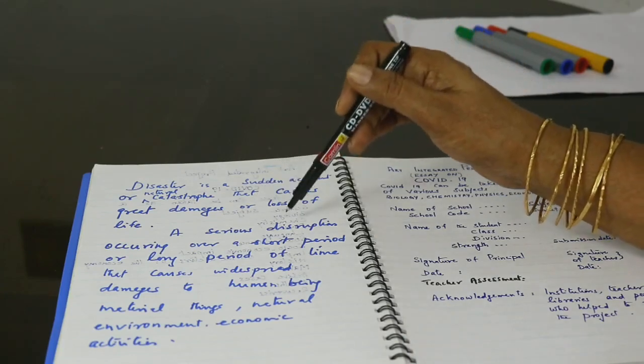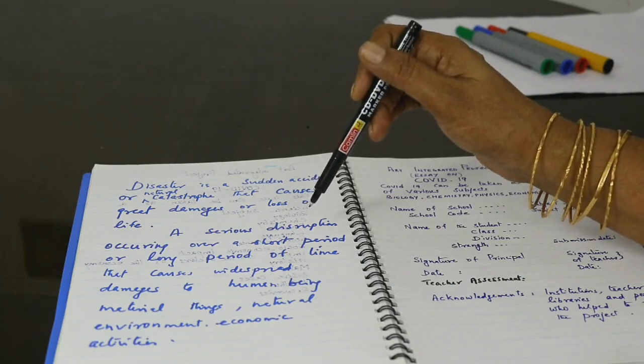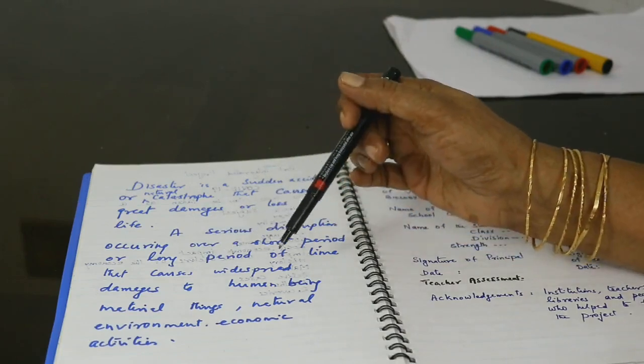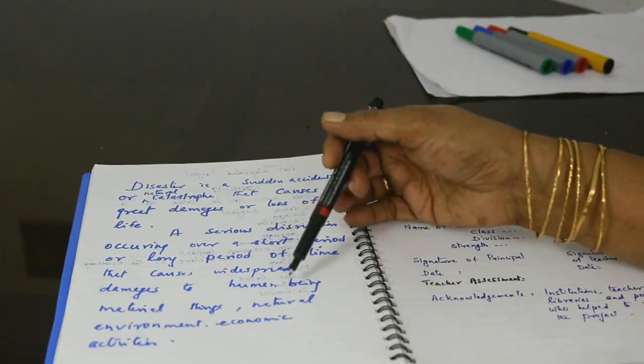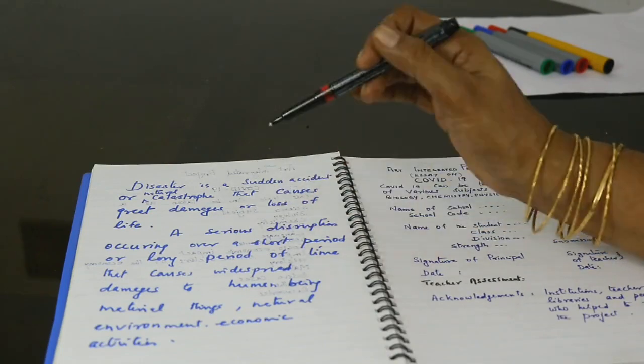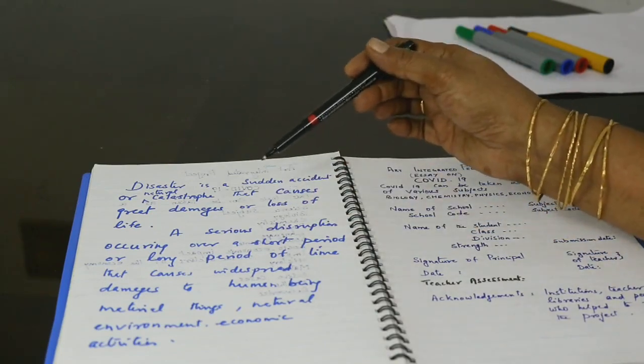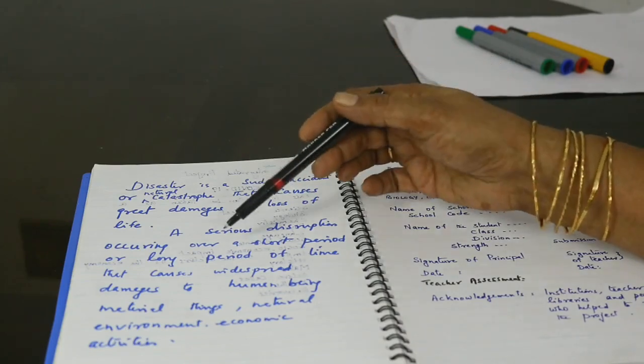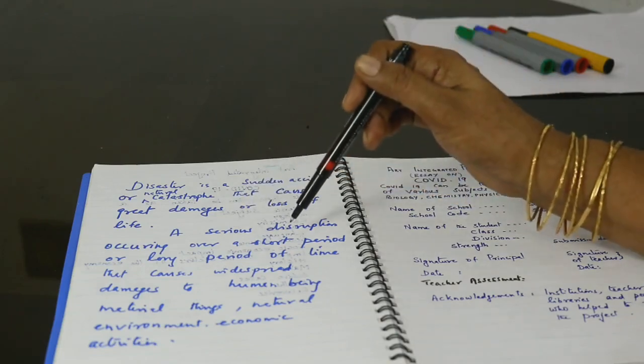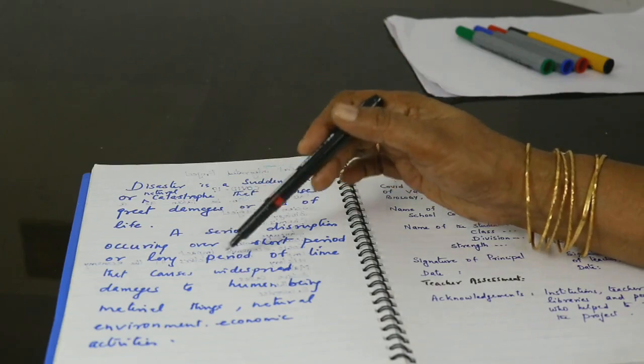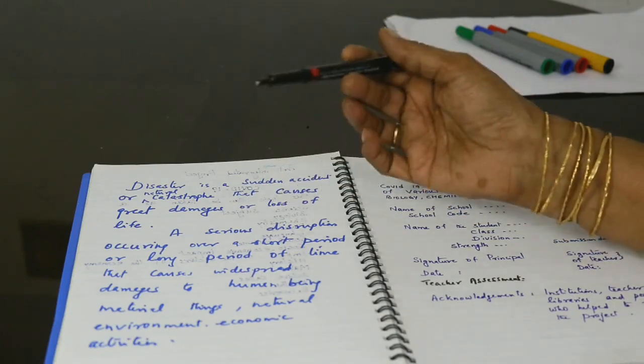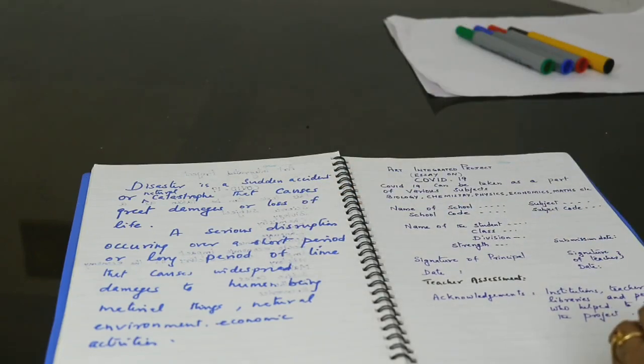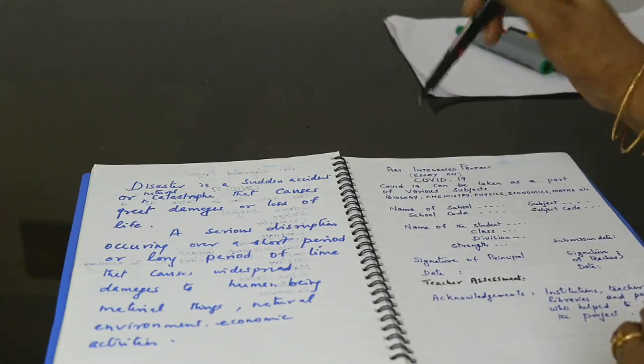It is a serious disruption occurring over a short period or a longer period of time that causes widespread damages to human beings, material things, natural environment, economic activities, etc. So we can see that the COVID-19 is a natural catastrophe or sudden accident. It damages great loss of life and is occurring not for a short period but extending for a longer period of time. So this COVID-19 can also be taken as a disaster.